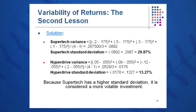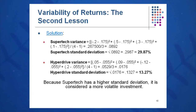For SuperTech, take the sum of the squared deviations, 0.2675, and divide by T minus one — since we have four observations, divide by three. We get a variance of 0.0892. To get the standard deviation, take the square root of 0.0892, which gives us 29.87%. This indicates SuperTech is a highly volatile investment with a higher variance and standard deviation than HyperDrive.